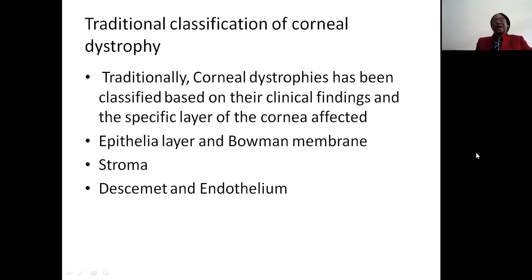Looking at the traditional classification of corneal dystrophy, this classifies corneal dystrophies based on their clinical findings and the specific layer of the cornea affected — that's the one most people use. It classifies them into the epithelial layer and Bowman's membrane, stroma, and then Descemet's membrane and endothelium.